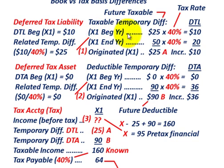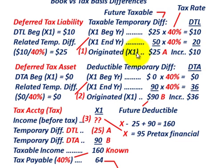At the beginning of the year we have $25,000, and at the end of the year our taxable temporary difference is $50,000. So what was originated during the year was $25,000 — simply the increase from $25,000 to $50,000.